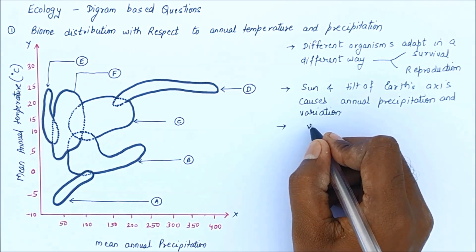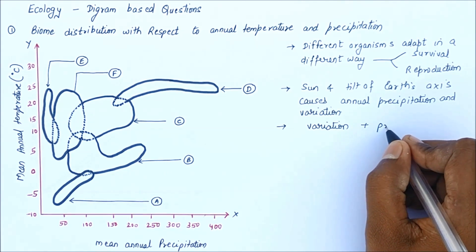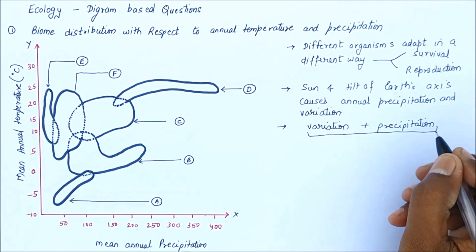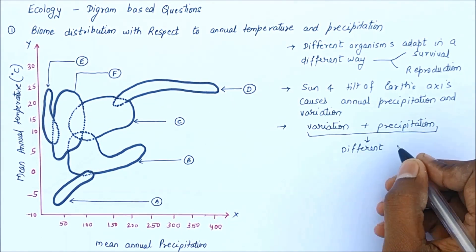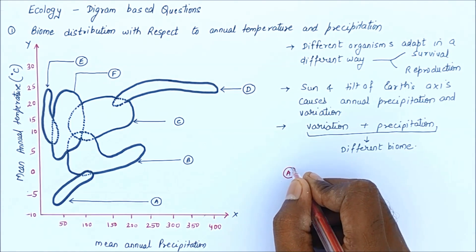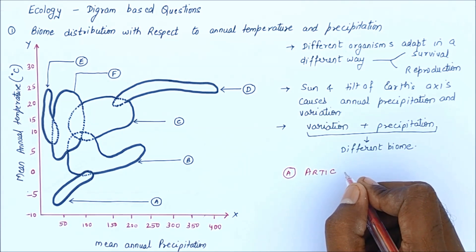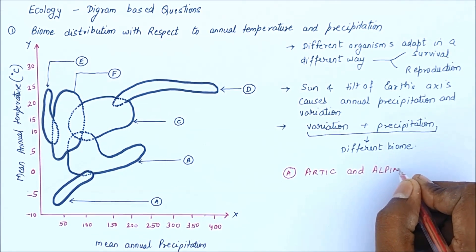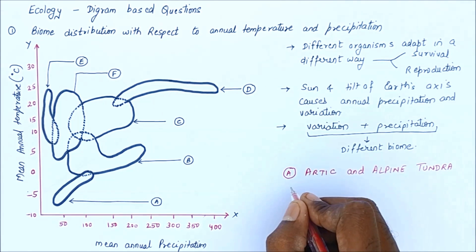Looking carefully at this diagram: the lower x-axis represents mean annual precipitation and the y-axis represents mean annual temperature. Looking at part A, the temperature is around minus five degrees Celsius — so it is a cold area, representing the arctic and alpine tundra region, where temperature goes to minus five or even minus ten degrees Celsius.